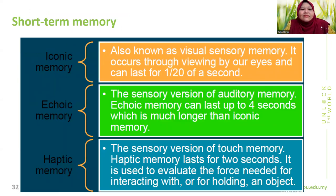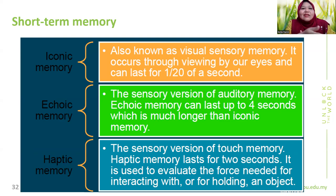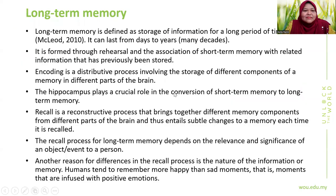Iconic memory, a type of sensory memory, is visual and can last one to twenty seconds. Echoic memory can last about four seconds — longer than iconic. Haptic memory lasts around two seconds and is used to evaluate the force needed to interact with or hold an object. For example, if you accidentally touch a hot kettle or cup, haptic memory informs how you react — whether you put it down or can still hold it.